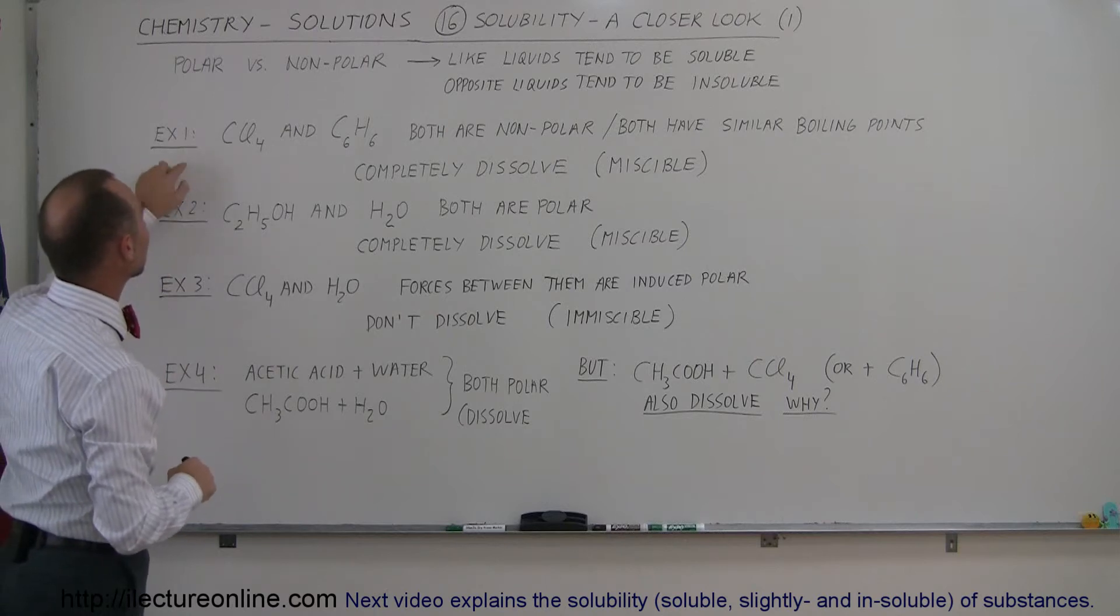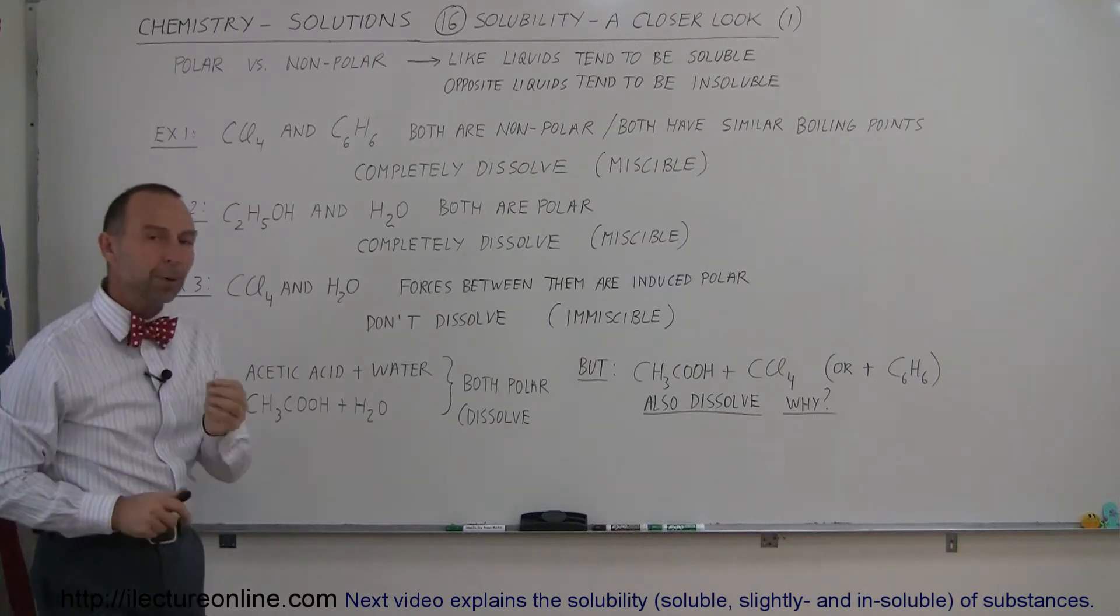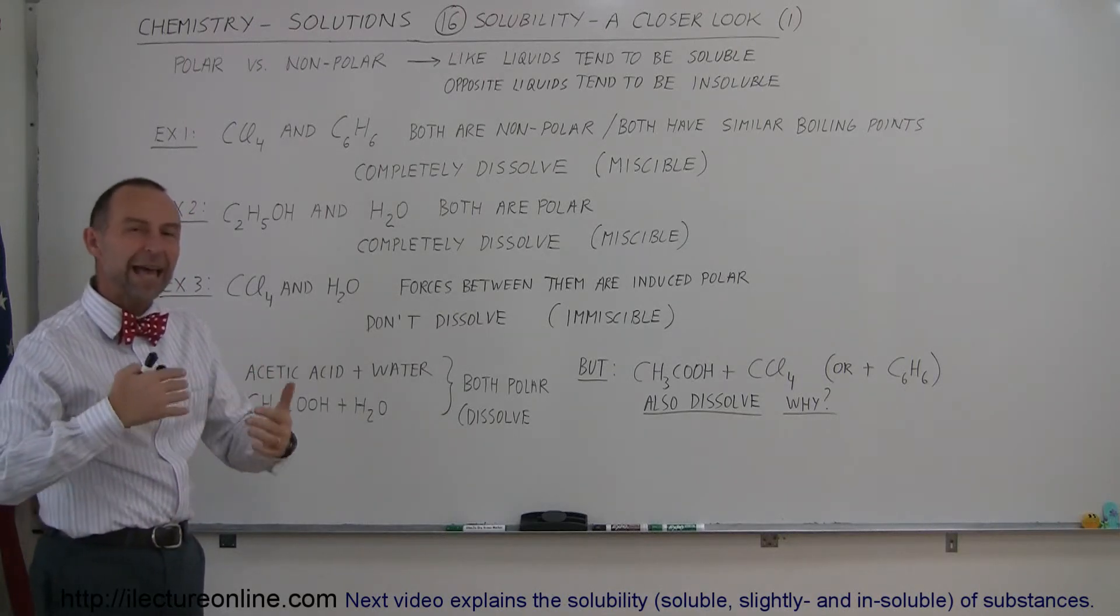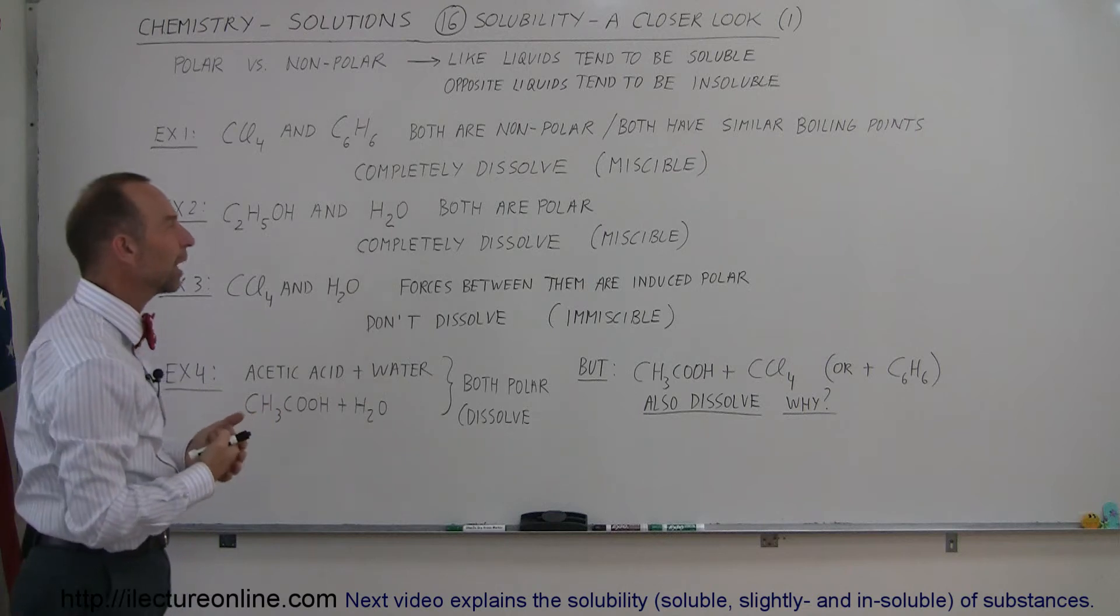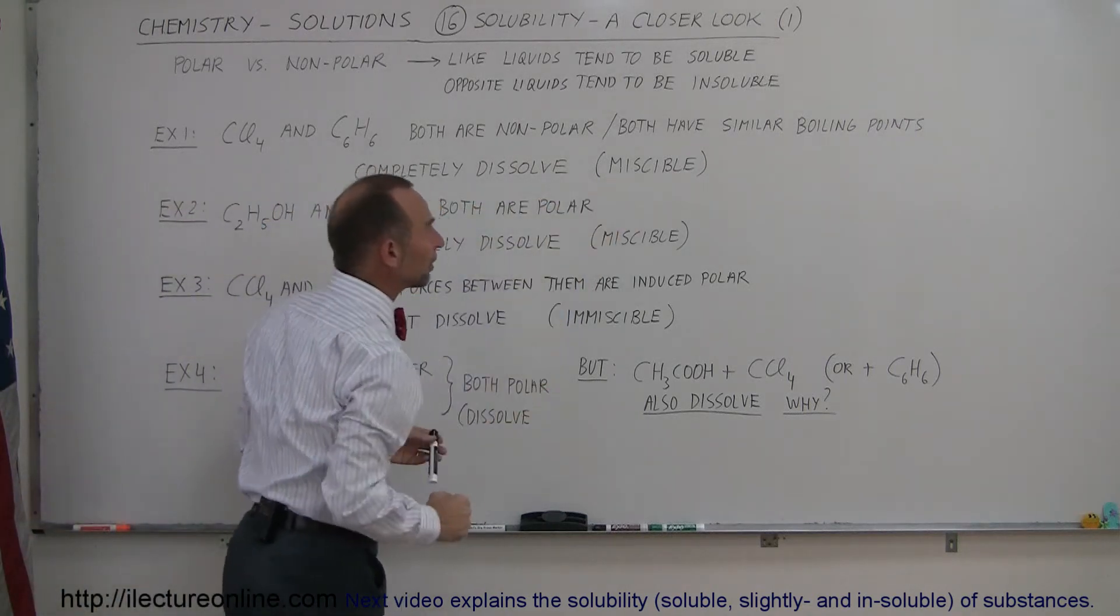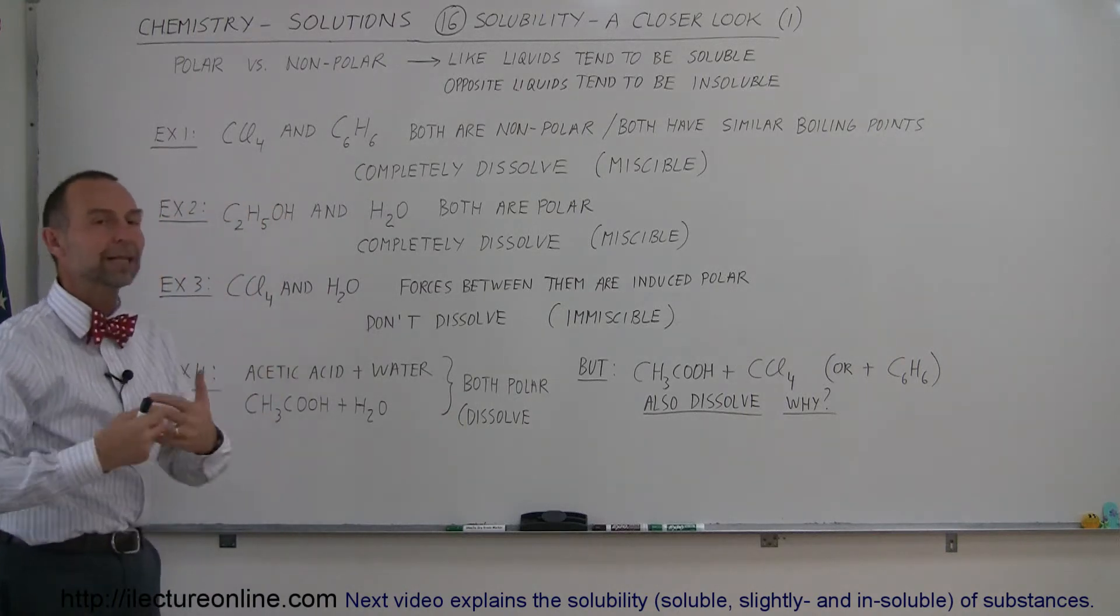Let's do an example. Let's take carbon tetrachloride and benzene. They're both non-polar and they both have similar boiling points, which means they act and behave very similarly in a lot of ways. And they completely dissolve very easily. And so therefore, they're called miscible. That's a term we use for the fact that they can completely dissolve.